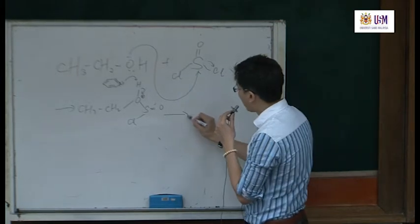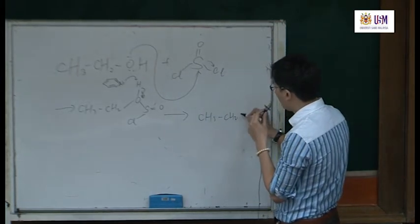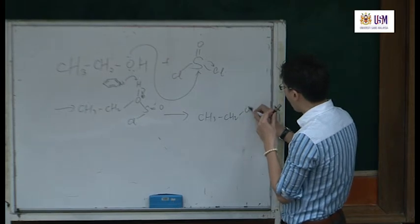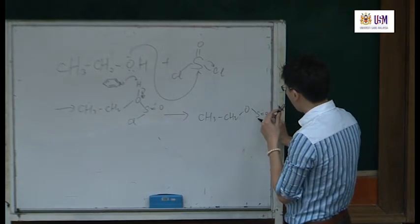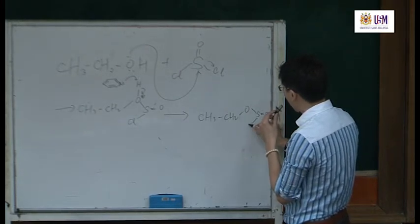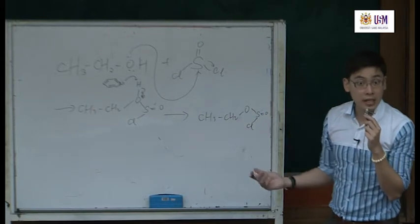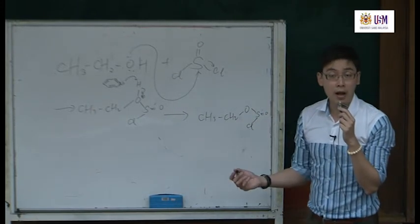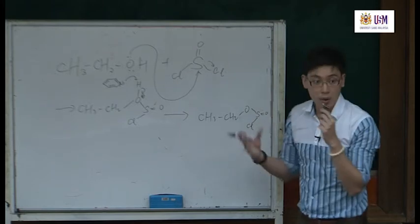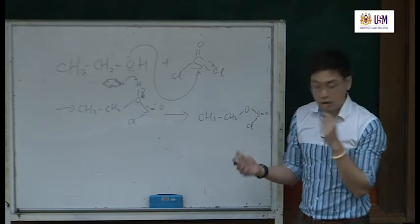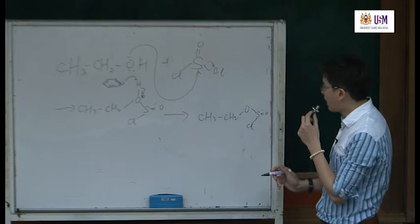Then you get CH₃CH₂-O-S(=O)Cl. You have to draw this out fully; otherwise you cannot see the structure clearly. Like last week, one of your friends just wrote S-O-Cl and you cannot see that there is still another Cl here.